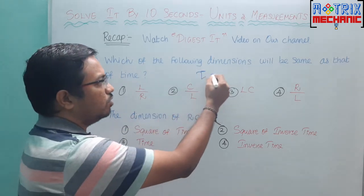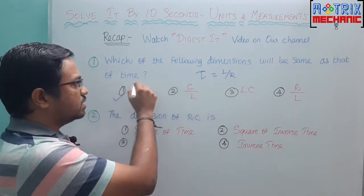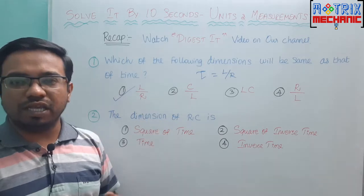Because time constant is equal to L by R - inductance by resistance. This is the dimension of RC as well.